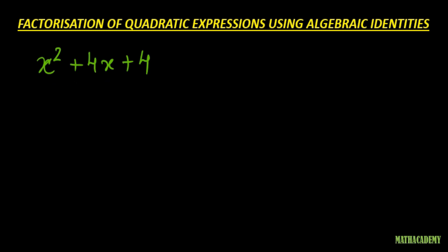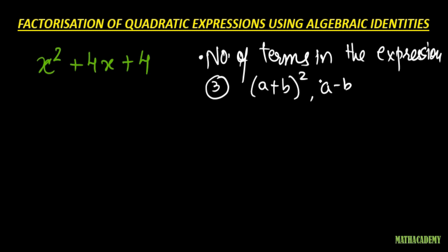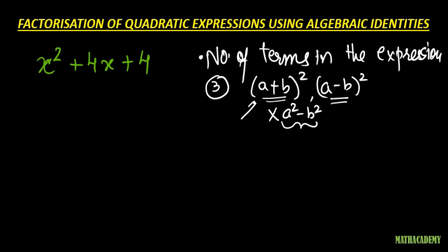The first thing which we need to see is the number of terms in the expression. We see that in this particular expression there are three terms. The identities whose expansion consists of three terms are (a + b)² and (a - b)². It will surely not be a² - b² because that has just two terms. So if the identity is applicable here, it will be either (a + b)² or (a - b)².